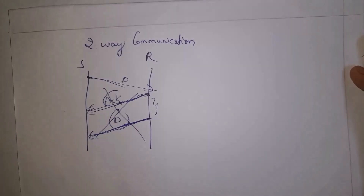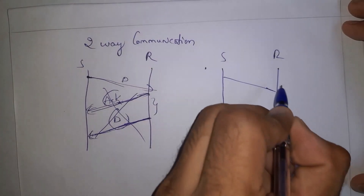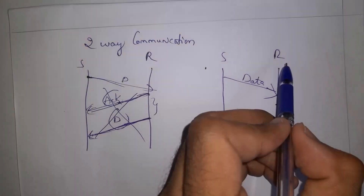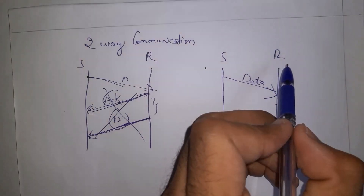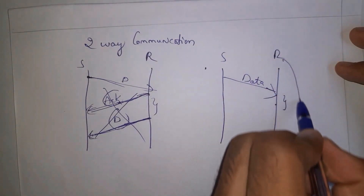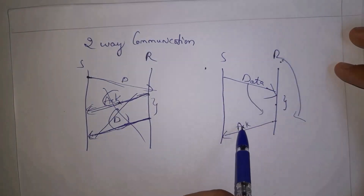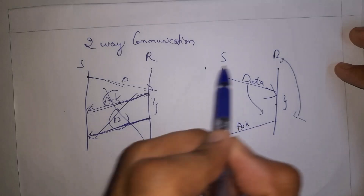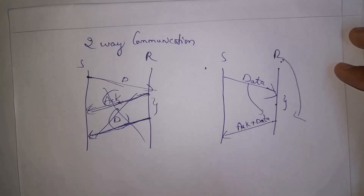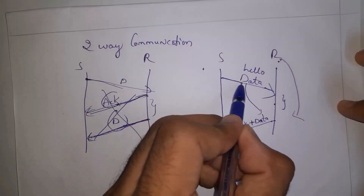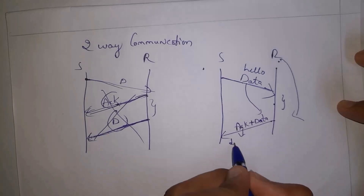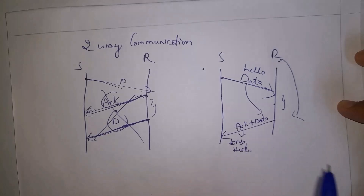In piggybacking, whenever the sender sends data, the receiver will not send acknowledgement immediately. Instead, the receiver will wait until its own data is ready. Whenever the receiver's data is ready, the receiver will send the acknowledgement for the sender's data along with its own message. For example, if the sender sends 'hello', the receiver will give acknowledgement like 'message hello is received successfully'.